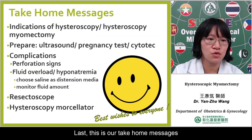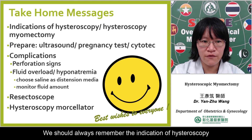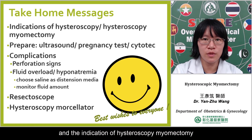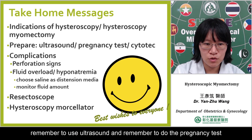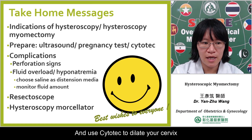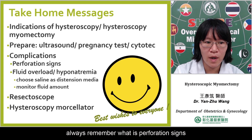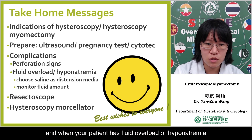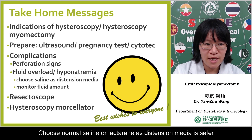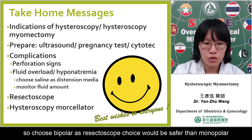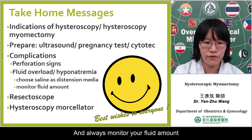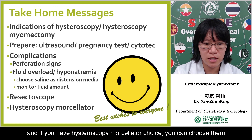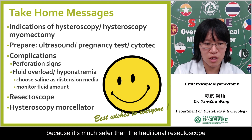This is our take-home message. Always remember the indications of hysteroscopy and the indications of hysteroscopic myomectomy. Choose the best candidate patient for hysteroscopic myomectomy. During preparation, remember to use ultrasound and do a pregnancy test to exclude viable pregnancy. Use Cytotec to dilate the cervix. For complications, always remember the signs of perforation and recognize when your patient has fluid overload or hyponatremia. Choose normal saline or lactated Ringer's as distension media for safety. Choose bipolar over monopolar for resectoscopy. Always monitor your fluid amount. If you have a hysteroscopic morcellator available, choose it because it is much safer than a traditional resectoscope.